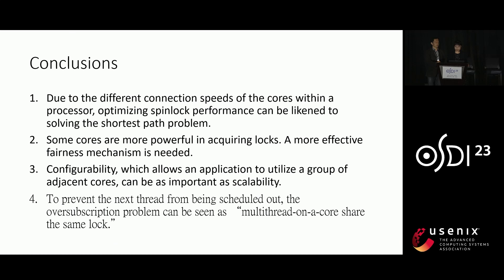In conclusion, optimizing spinlock performance on multi-core processors is akin to solving the shortest path problem due to varying connection speeds between cores. The existence of more powerful cores in acquiring locks necessitates the development of more effective fairness mechanisms. Configurability enabling the utilization of adjacent core groups is crucial for scalability. To address the over-subscription problem and prevent thread scheduling issues, treating over-subscription as multiple threads on a core sharing the same lock proves beneficial. This contributes to enhancing spinlock performance and ensuring fairness in multi-threaded systems.